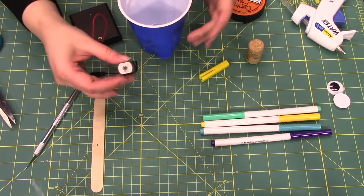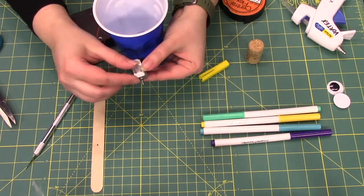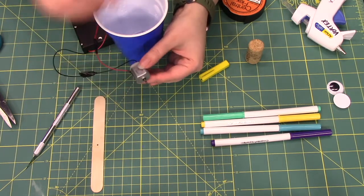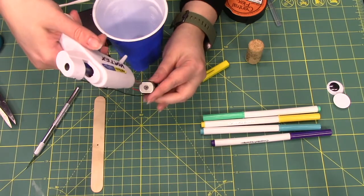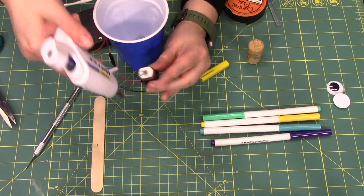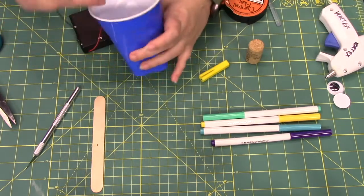I'm going to go ahead and dab some hot glue on either side. Make sure that you do not get any hot glue on this part, which is called the shaft. So I'm just going to quickly glue, add some drops, and I'm going to quickly push it into my cup.